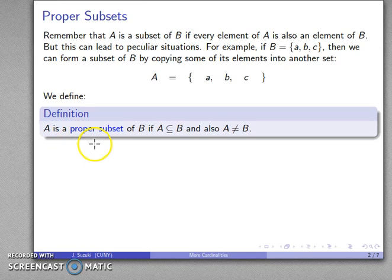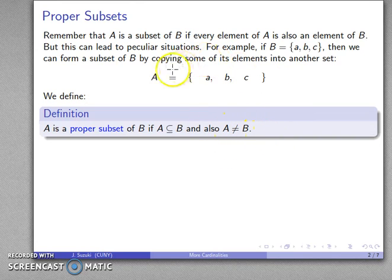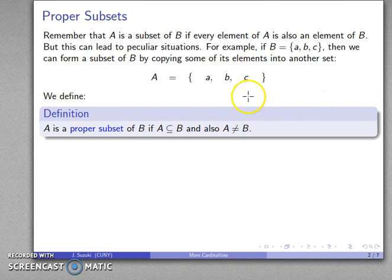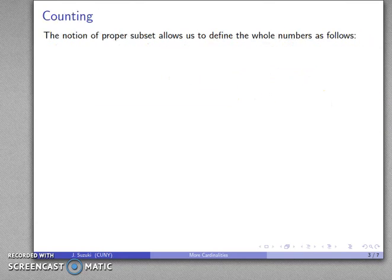Something is a proper subset of another if, first of all, it has to be a subset, but what makes it proper is it's not the same set. A is a subset of B, but since it's the same as B, it's not a proper subset. On the other hand, if I were to exclude one of these elements, then I would have a proper subset.